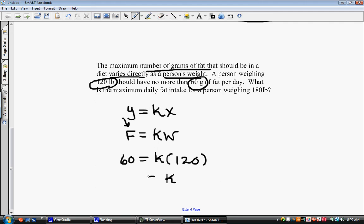So our equation of variation, if we take the information that we have found and plug it back into our original equation, we now have F equals .5 times W. So that's our equation for figuring out the number of grams of fat that you should have directly varying with your weight.